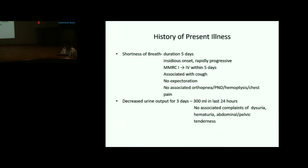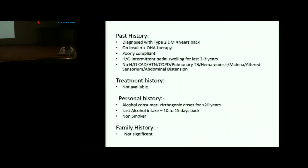No complaints of dysuria, hematuria, or abdominal or pelvic tenderness. Past history: diagnosed with Type 2 DM four years back, on insulin plus OHA therapy but poorly compliant. History of intermittent swelling for 2-3 years. No history of coronary artery disease, hypertension, COPD, pulmonary TB, hematemesis, or melena.